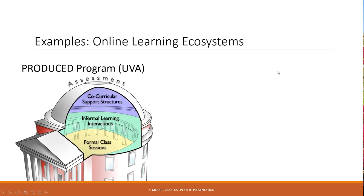I'll give you a few examples from some programs that we've built — these are from higher ed but they'll be pretty consistent, and I'll pull up some other examples in a bit. When we built the online program at the University of Virginia, we planned not just the formal class sessions but also what informal learning interactions we wanted to ensure continued to take place, and what were some co-curricular support structures — things like student clubs where we were helping students continue to get together outside of a formal class session.